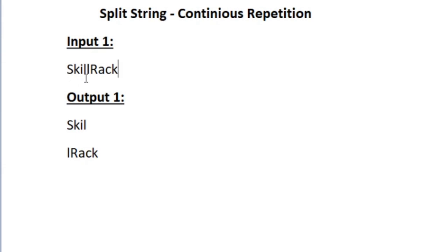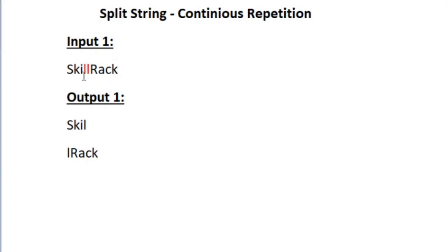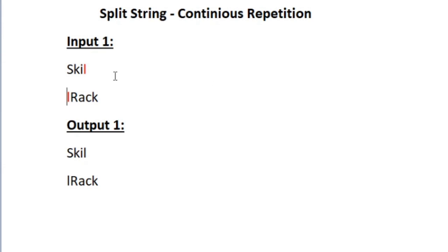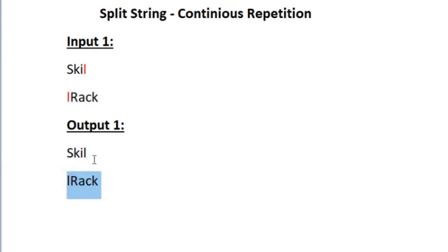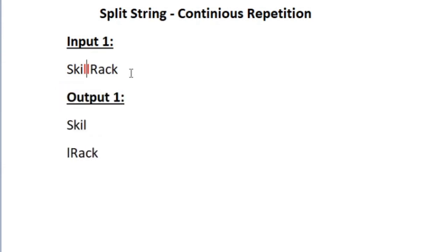In sample input 1, the character 'l' is repeating continuously for 2 times. Since 2 is an even number, it satisfies the condition, so we have to split at the middle. After splitting, this is how the output should be printed, and we can verify it matches the expected output. The character 'l' is only repeated for an even number of times, so we split at only one position.